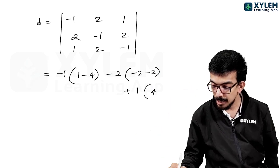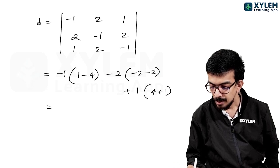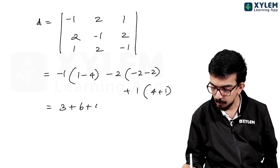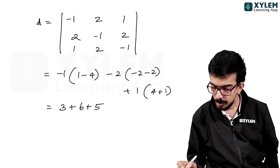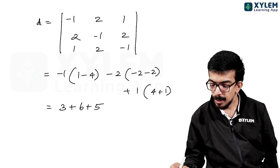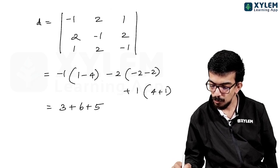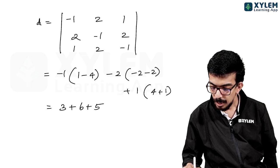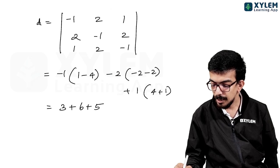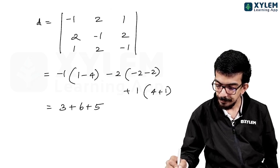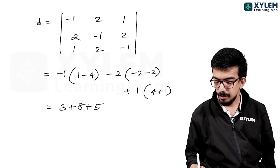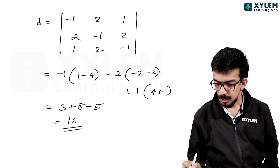Continuing with determinant expansion: -1 into (1 - 4) minus 2 into (-2 - 2) plus 1 into (4 + 1). This gives (-1)(-3) plus (-2)(-4) plus (1)(5), leading to 3 plus 8 plus 5, giving the correct answer.